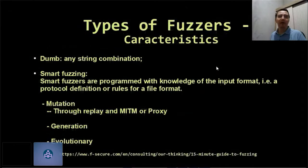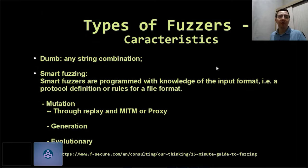Types of fuzzers. Might be dumb or smart fuzzing. Dumb — any string combination. Smart fuzzers are programmed with knowledge of an input format, a protocol definition, or rules for a file format. Smart fuzzers might be mutation, generation, or evolutionary. I won't speak in detail about smart fuzzers due to the little time we have, but I left a link to a secure website with more information about smart fuzzers.